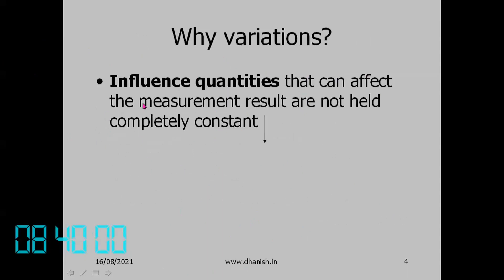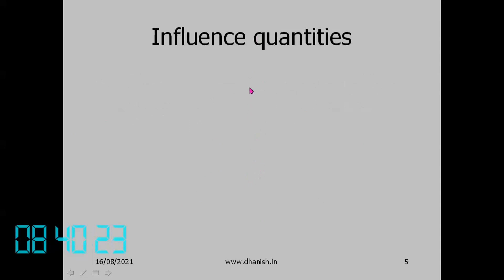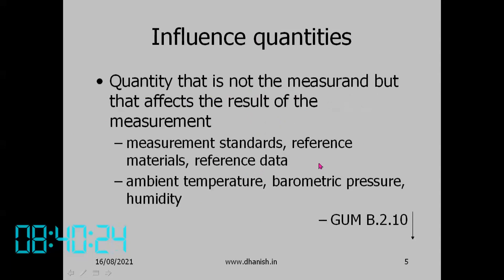The explanation is that influence quantities — quantities that can affect the measurement result — are not held completely constant. That is why we get variation in the measurement result. An influence quantity is any quantity that is not the measurand but that affects the result of the measurement.